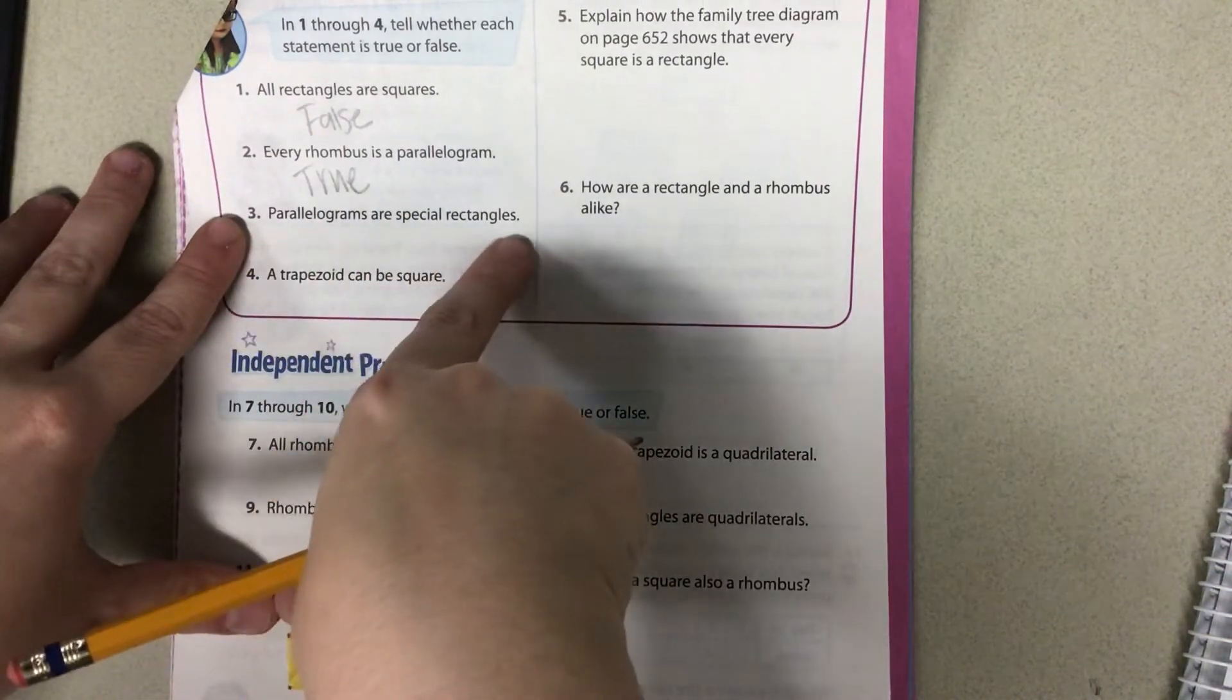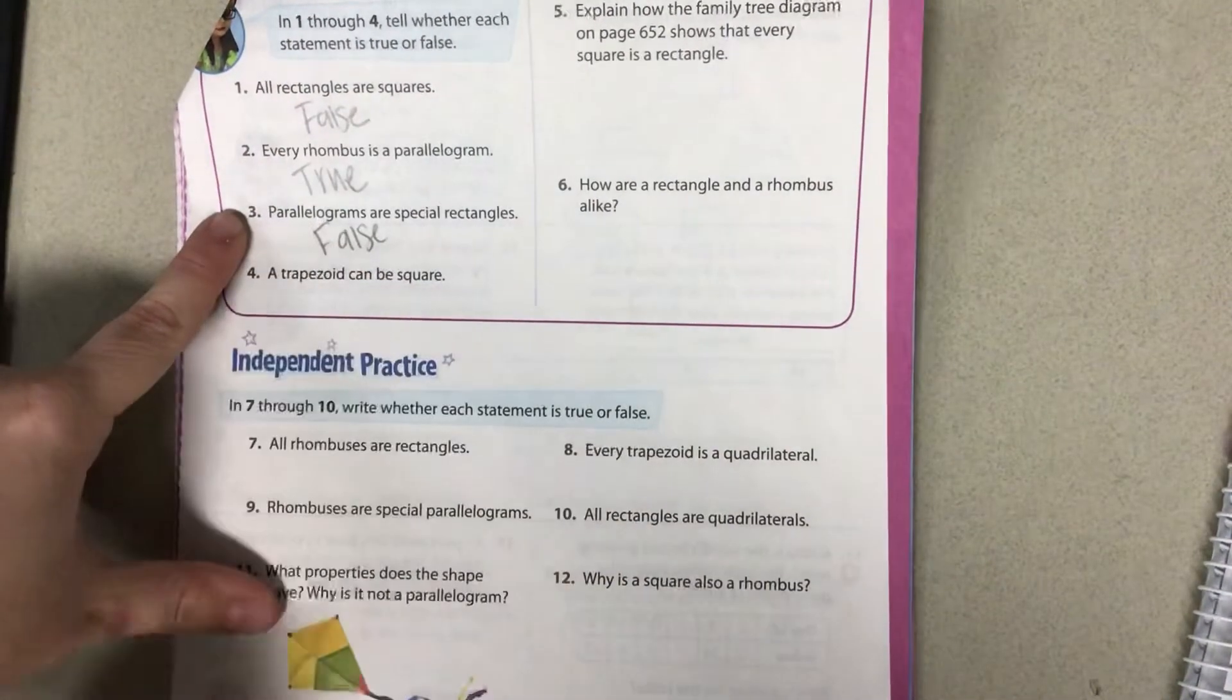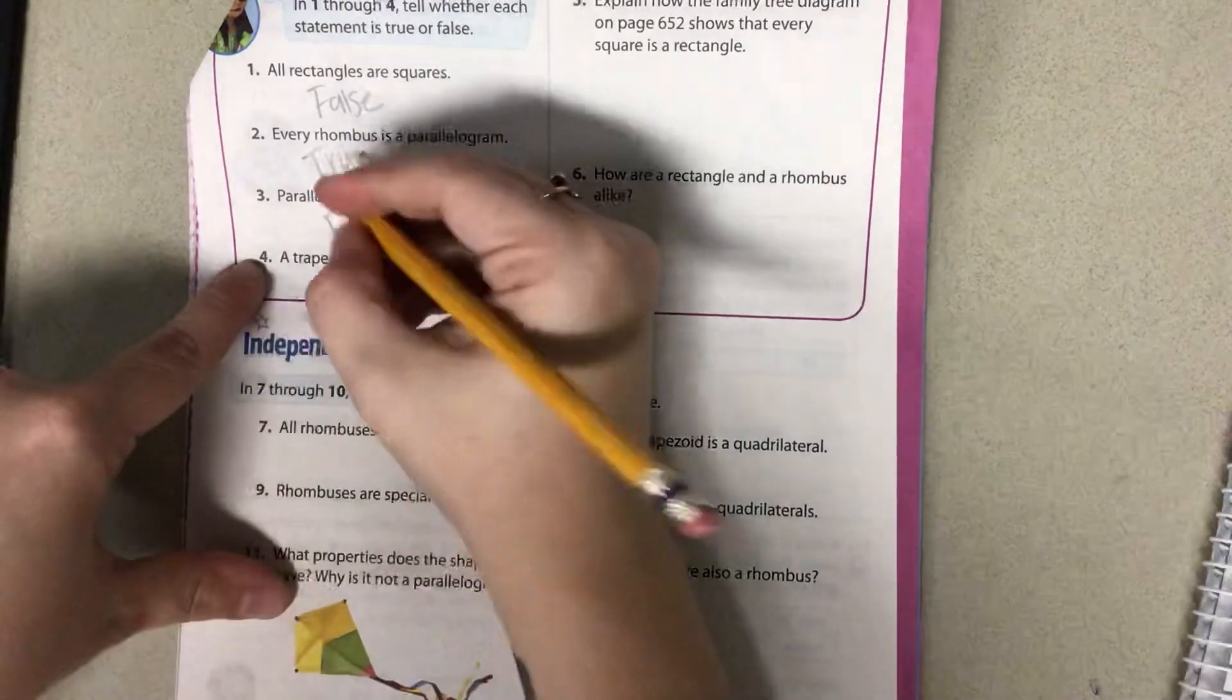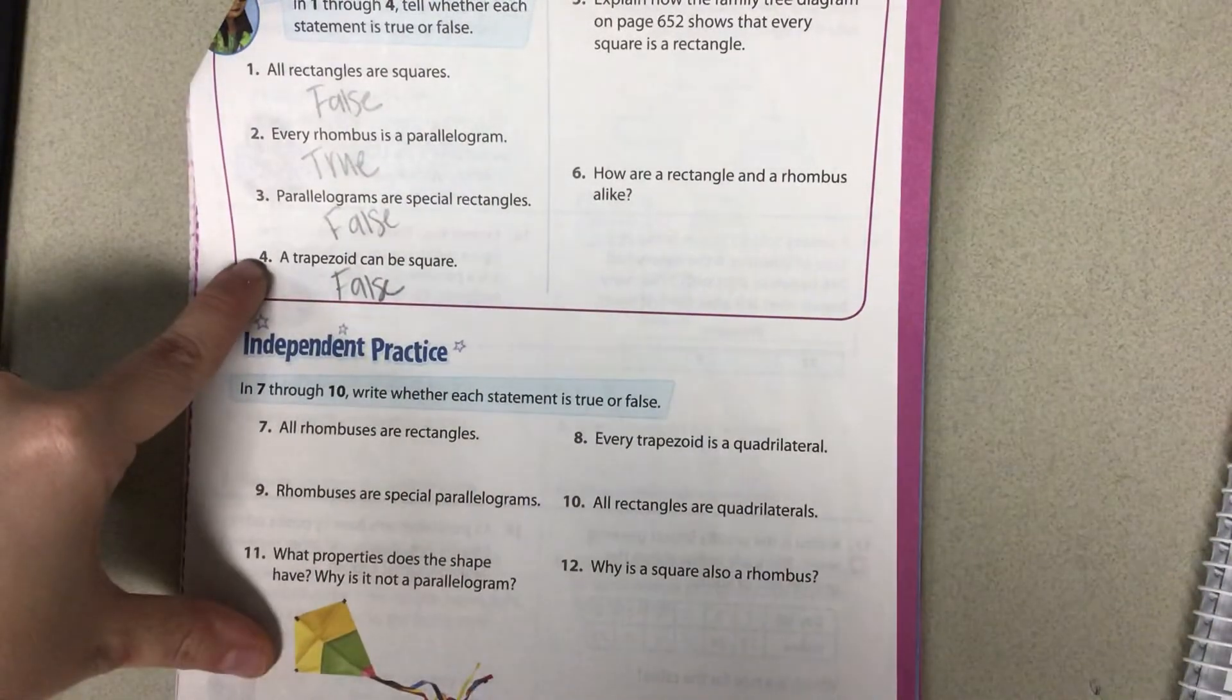Parallelograms are special rectangles. That's false. Because parallelograms do not have four right angles. A trapezoid can be a square. Also false. Because we do not have right angles.